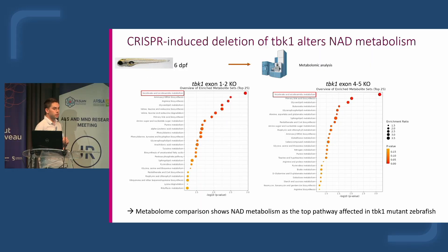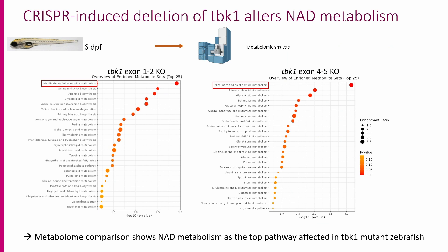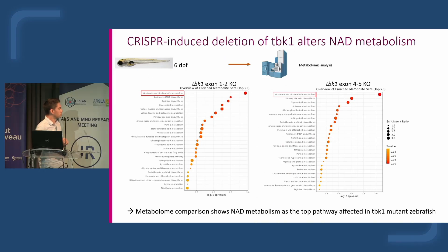Given the wide range of effects of TBK1, we expected effects on the metabolome of zebrafish and performed metabolomic analysis. We found similar results in both CRISPR strategies — deleting exons 1, 2 and exons 4, 5. The top pathway highlighted was nicotinamide metabolism and NAD+ metabolism, as well as purine metabolism and one-carbon metabolism.